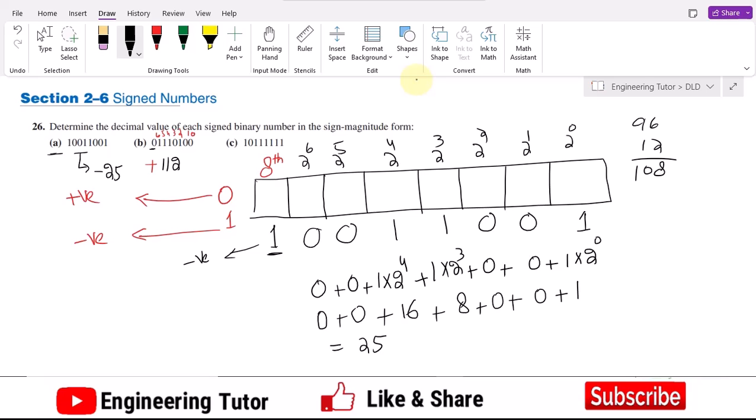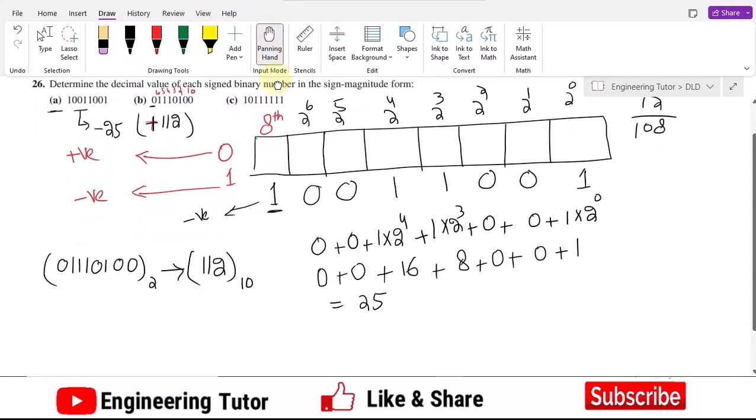So this is now plus 112. The decimal equivalent of 0 1 1 1 0 1 0 0, so in decimal the equivalent of it is plus 112. And this one, now solving the last of it